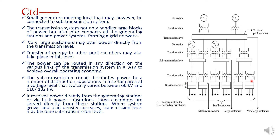The sub-transmission circuit distributes power to a number of distributed substations in a certain area; voltage varies between 66 kV and 132 kV. The primary distribution receives the power directly from the generating station or bulk power station. Large consumers are served directly from this station. When the system grows and load density increases, transmission level may become sub-transmission level.